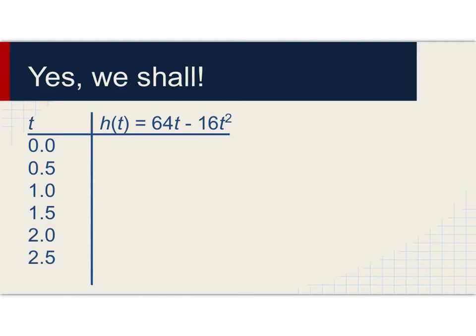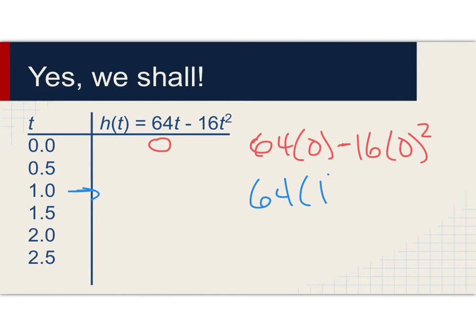We have these time values, and for each of them we're going to replace t with that number. For zero, we're trying to figure out what 64 times zero minus 16 times zero squared is, and that's zero. At one second, we have 64 times one minus 16 times one squared, which is 64 minus 16, and that makes 48.